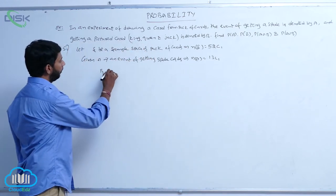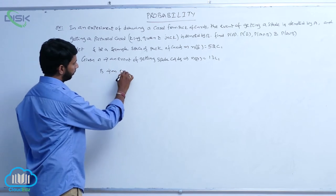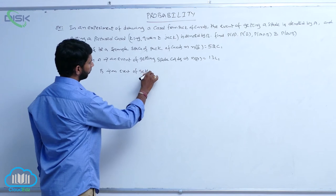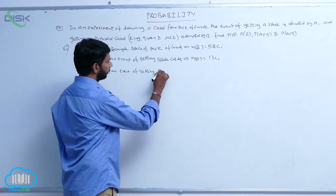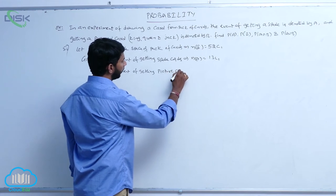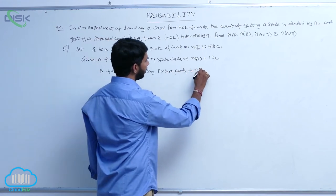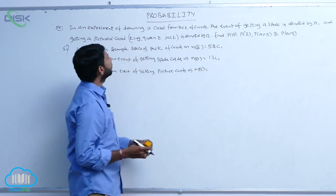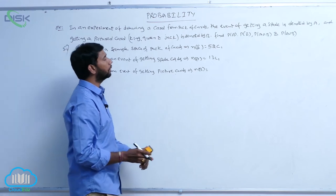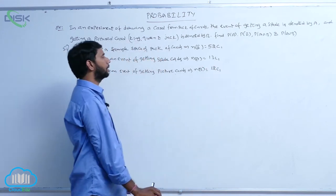And given B is an event of getting picture cards. N of B is equal to: there are 4 kings, 4 queens, and 4 jacks, so total 12 cards. One is selected in 12C1 ways.